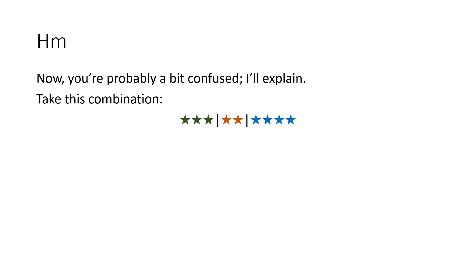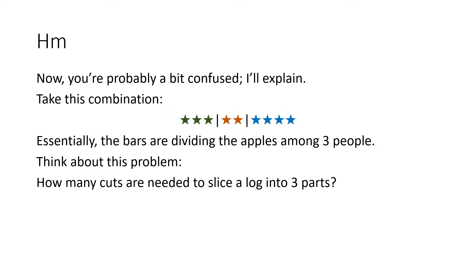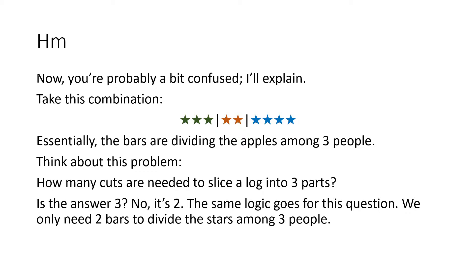So you may be a bit confused, so let's take this star and bar combination. We have three green stars, then a bar, two yellow stars, then a bar, and then four blue stars. Essentially the bars are dividing the apples among three people. Think about this problem: how many cuts are needed to slice a log into three parts? Well, you only need two. The same logic goes for this question — we only need two bars to divide the apples among three people.